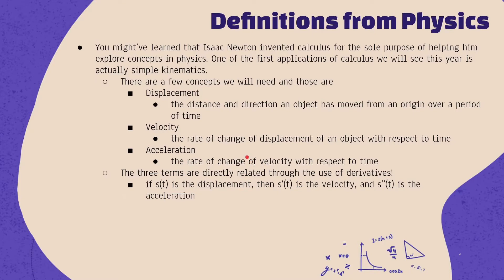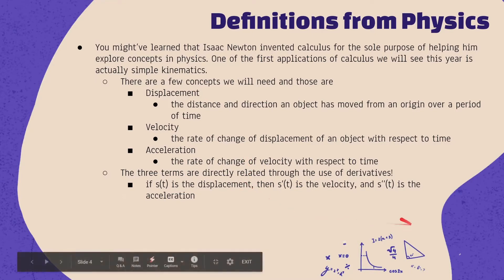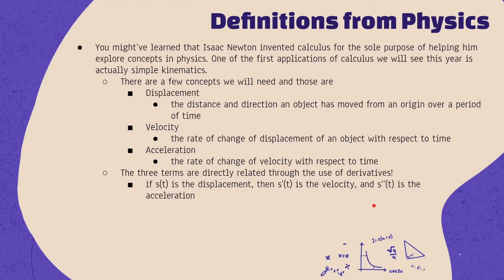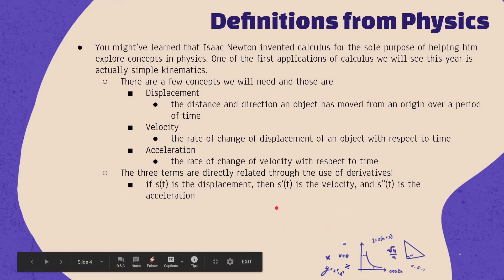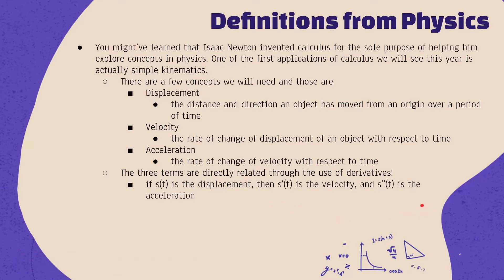Acceleration is the next step after velocity — it's the rate of change of velocity with respect to time. So if I'm moving 10 meters per second in some direction, my acceleration is how fast I'm accelerating. For example, if I was going 1 meter per second at the start but then ran at 20 meters per second at the end, the acceleration is that change in velocity with respect to time.